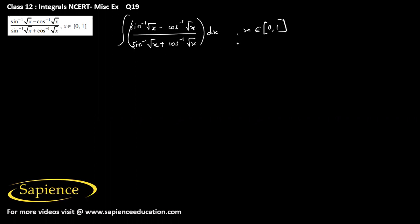We know that sine inverse root x plus cos inverse root x equals pi by 2.